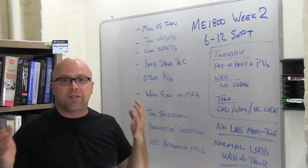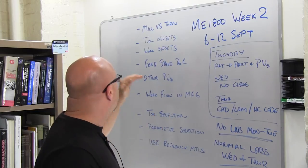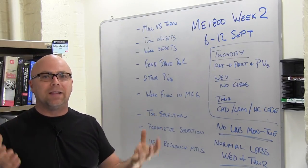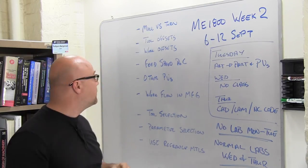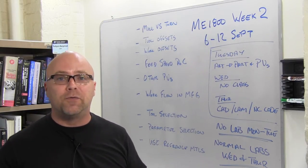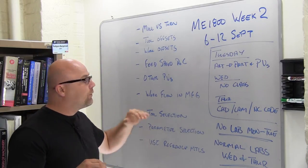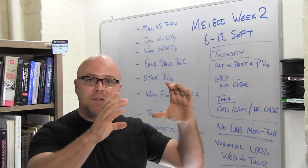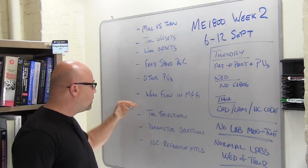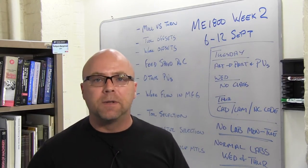By the end of the week I'm expecting you to have a thorough understanding of the difference between milling and turning, a thorough understanding of tool offsets and work offsets — we'll talk about that in lecture and you'll go through it in labs — knowing how to select the right feed, speed, and depth of cut, knowing how to create the experiment that determines what the right feed, speed, and depth of cut are, and understanding other process variables that will affect your ability to make a good part. We'll look at the workflow in manufacturing — those steps going from a solid model or set of drawings all the way through to the finished part.